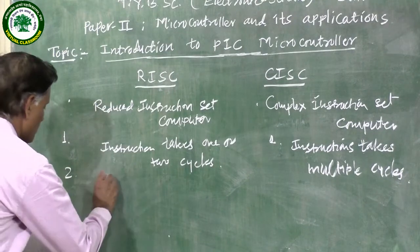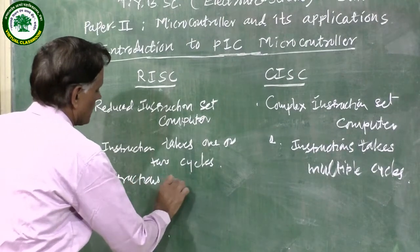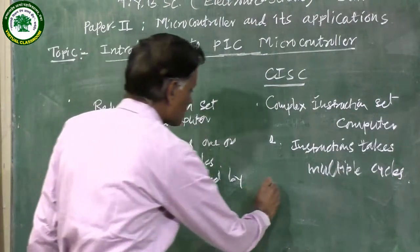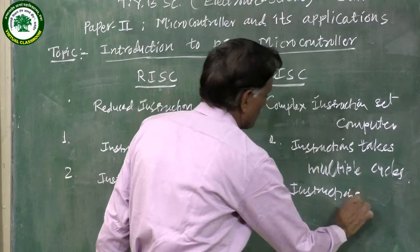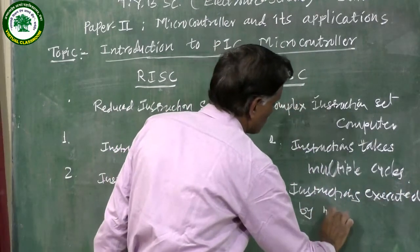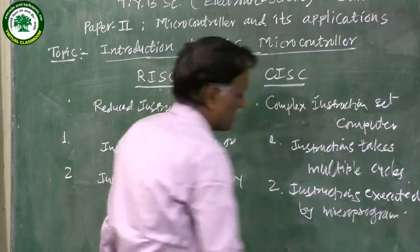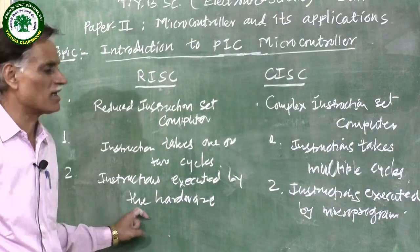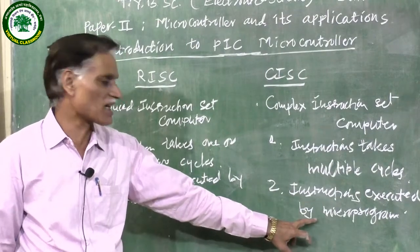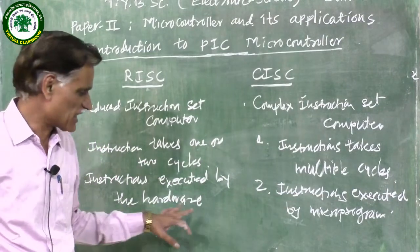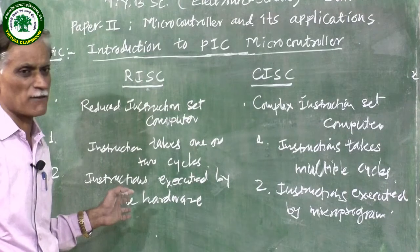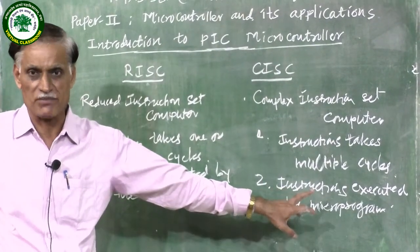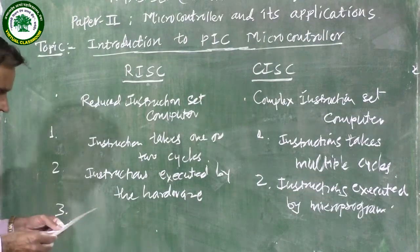The second point is that in RISC, instructions are executed by the hardware, while in CISC, instructions are executed by microprograms. This point is also very important because the time required to execute instructions by hardware is very small compared to the time required for instructions executed by microprograms. Therefore, in RISC architecture, instructions are executed by hardware to increase CPU speed, while in CISC architecture, they are executed by microprograms.